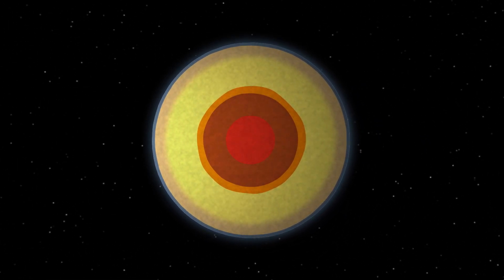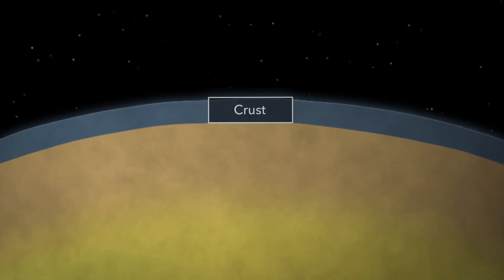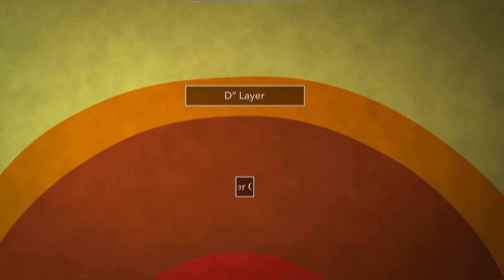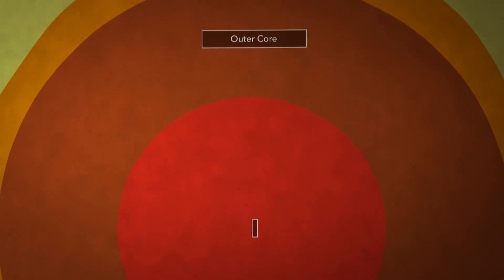From crust to core, the interior of the earth is a dynamic system featuring a huge variety in pressure, temperature, and composition.